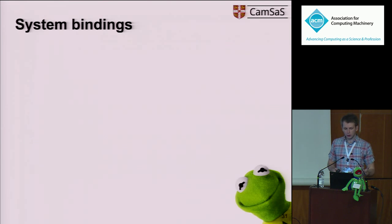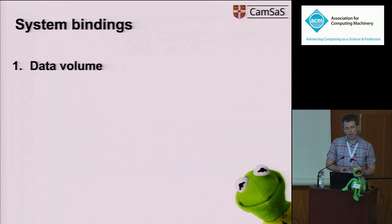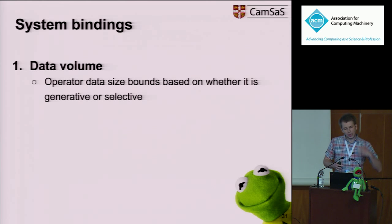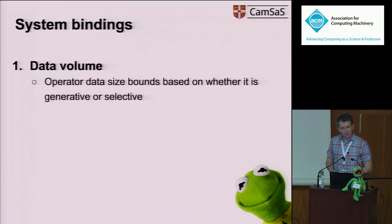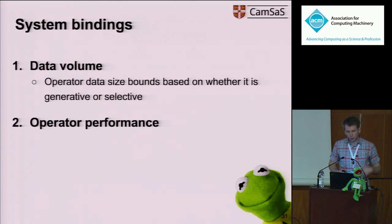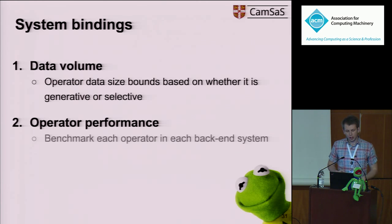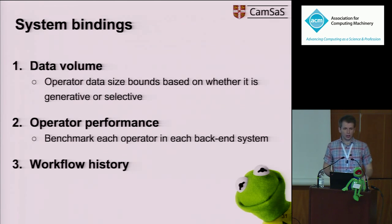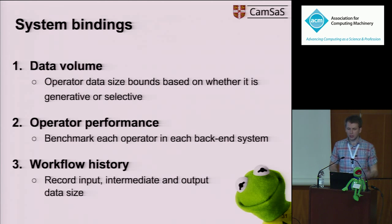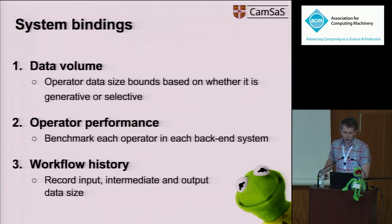To decide which back-end execution systems to use, we use a simple cost model with three main signals. First, data volume: for every operator, depending on its type and input size, we try to predict the size of its output. Second, operator performance: we run benchmarks for every operator in every back-end execution engine we support. Finally, since workflows in data centers tend to run periodically, for every run we record information about the input size, intermediate data size, and output size, and feed this into the cost model.